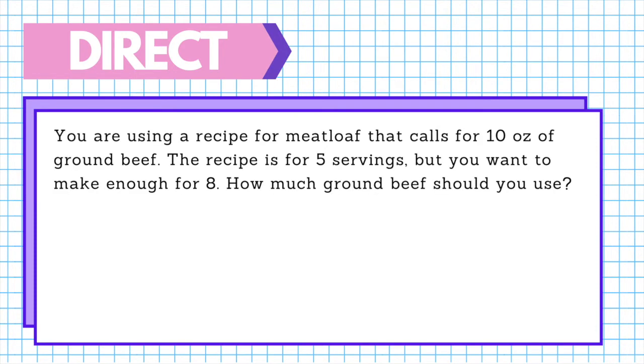Let's differentiate the three. With direct proportion, two quantities are directly proportional if when one quantity increases, the other quantity increases as well. Same goes that when one quantity decreases, the other quantity decreases at the same rate. For example: you are using a recipe for meatloaf that calls for 10 oz of ground beef. The recipe is for five servings, but you want to make enough for eight. How much ground beef should you use? Here we have two quantities — the amount of ground beef and the number of servings. When the number of servings increases, the amount of ground beef needs to increase as well, making this a direct proportion.